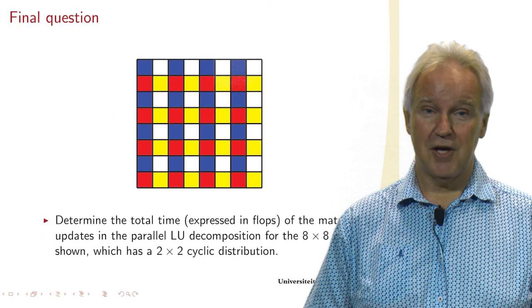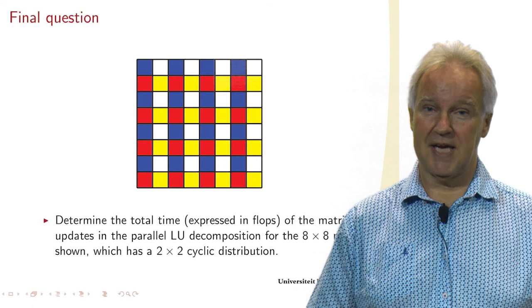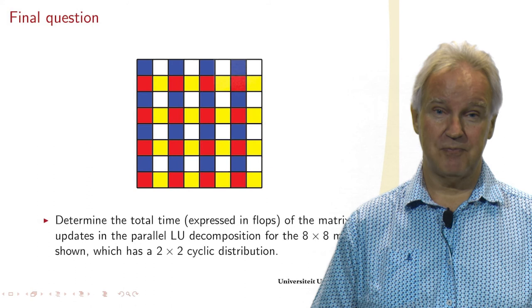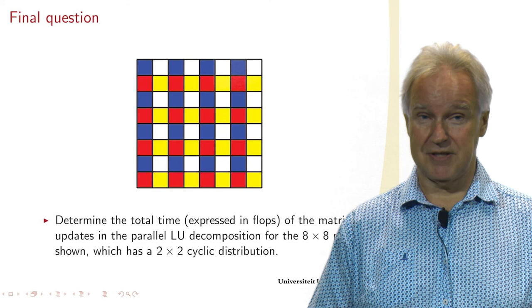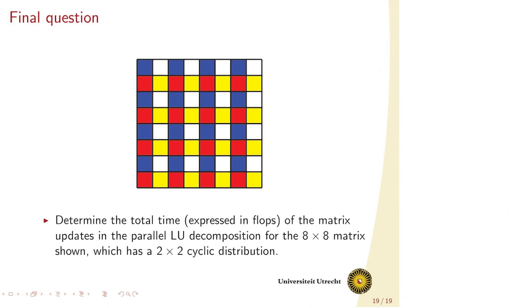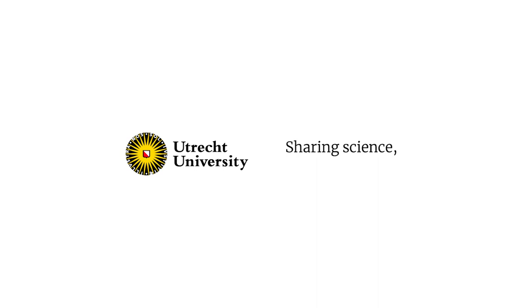A final question to you. Here you see a matrix. It's an 8 by 8 matrix with a 2 by 2 cyclic distribution. You should determine the total time expressed in flops of the matrix updates of the LU decomposition.